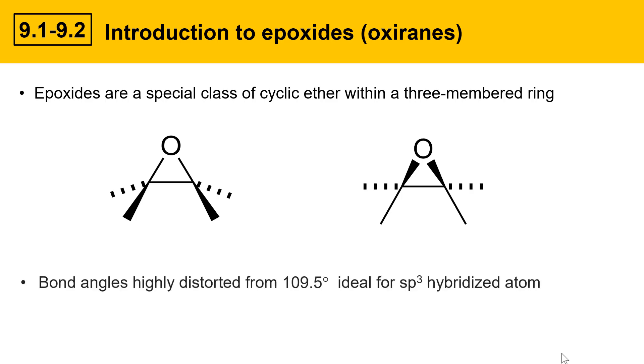The bond angles in epoxides are highly distorted from 109.5 degrees, which is the ideal for an sp3 hybridized atom. In an epoxide, the bond angles are pretty close to 60 degrees, and that's quite far away from 109.5.